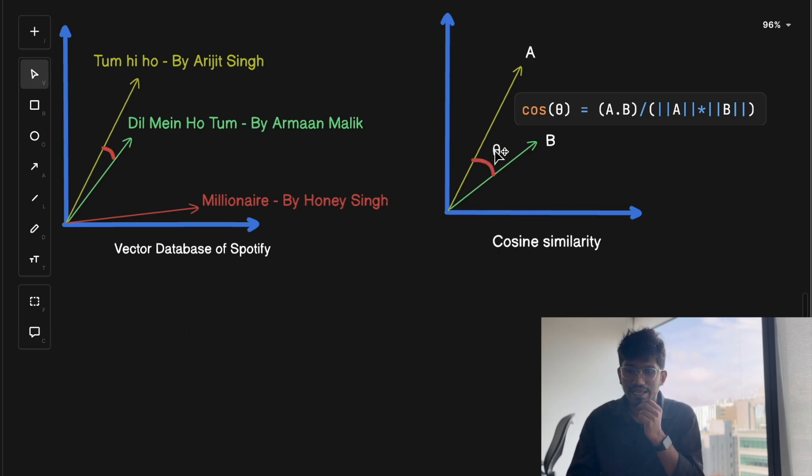What is cosine similarity? Cosine similarity measures the angle between two vectors. If the angle is small, that means the songs are really similar. If the angle is wide, the songs are quite different. For example, here, if you see the angle between the vector of Tum Hi Ho song and Dil Mein Ho Tum by Armaan Malik, it is a very smaller angle compared to Tum Hi Ho and the Millionaire song, which has a larger angle. So Tum Hi Ho by Arijit Singh and Dil Mein Ho Tum by Armaan Malik have a small angle, so Spotify might suggest them together. If you are listening to Tum Hi Ho, Spotify might suggest you Dil Mein Ho Tum as the next song instead of Millionaire.